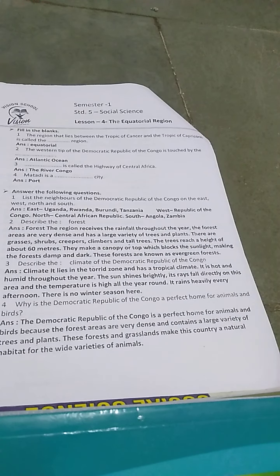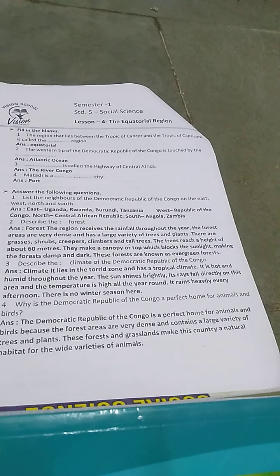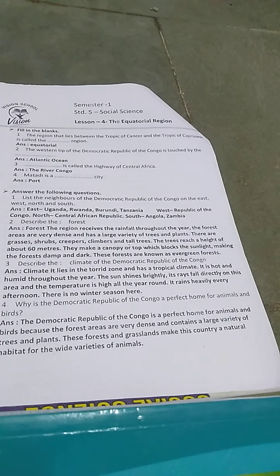In this forest, we have leaves throughout the whole year. We have many trees and lots of varieties of plants like grass, shrubs, creepers, climbers, and tall trees. Trees reach a height of about 60 meters. The canopy of trees blocks the sunlight, so it remains damp and dark below. That is why it is also called an evergreen forest.